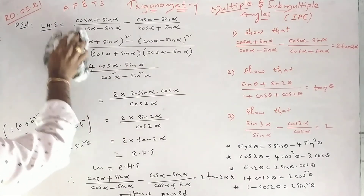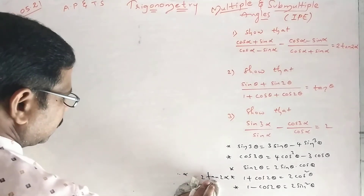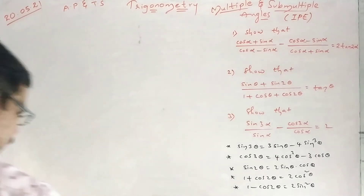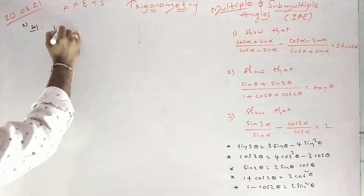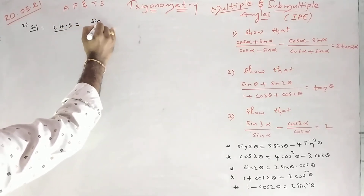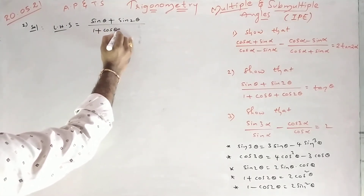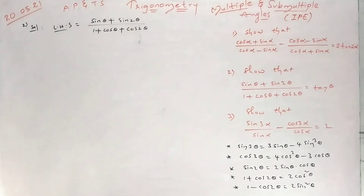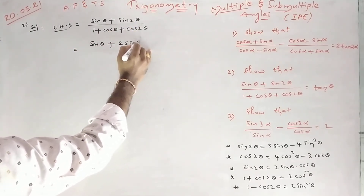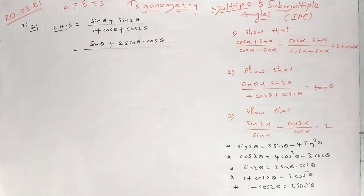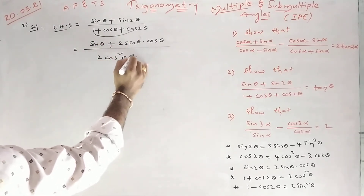Second one — I'll take LHS for the second one. LHS is sinθ + sin2θ over 1 + cosθ + cos2θ. Now this can be written as sinθ. sin2θ means 2sinθcosθ. And 1 + cos2θ means 2cos²θ plus cosθ. Just as I told you, 1 + cos2θ equals 2cos²θ.